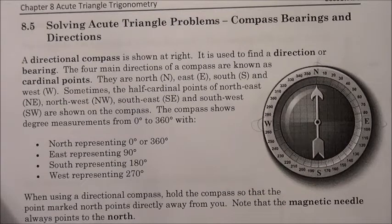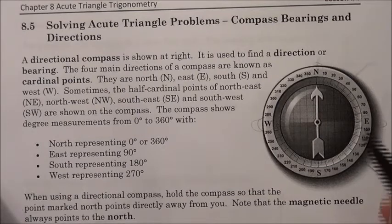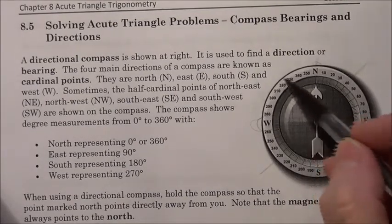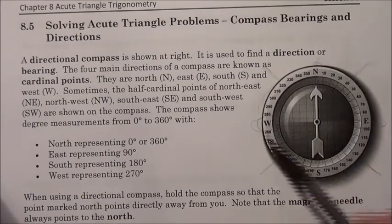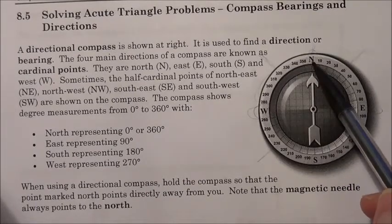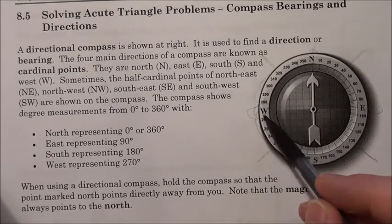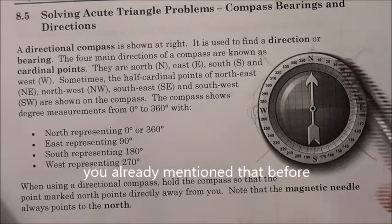Those are the four main cardinal directions. We also have the half-cardinal directions: northeast is at the 45-degree mark between north and east; southeast is the 45-degree mark between south and east; southwest is 45 degrees between south and west; and northwest is 45 degrees between west and north. The principal directions are: north is zero, or 360 degrees all the way around; east is 90 degrees; south is 180 degrees; and west is 270 degrees.